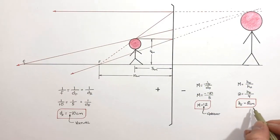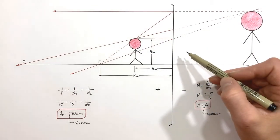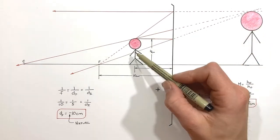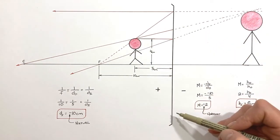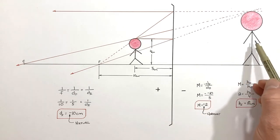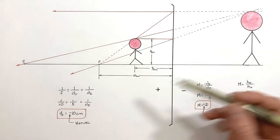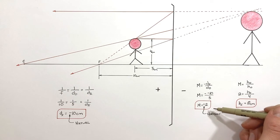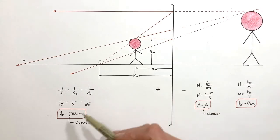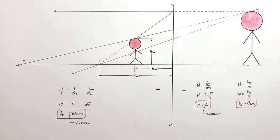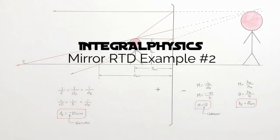Last, let's use our magnification to work out the actual height of the image. Knowing our magnification is 2 and our object height is 4 centimeters, we find the image height is 8 centimeters. So in this problem we've drawn a ray tracing diagram for an object placed extremely close to a concave mirror, and confirmed the result using the mirror equation and magnification equations to find the image distance, magnification, and image height.